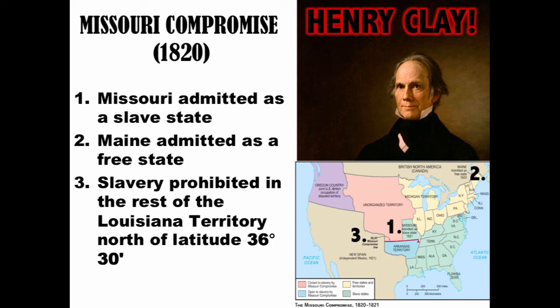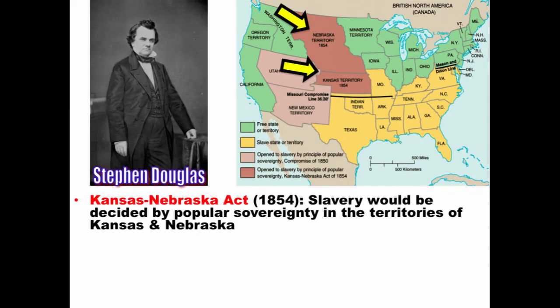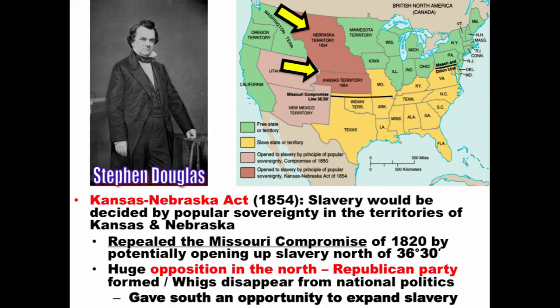The Missouri Compromise deal was undone in 1854 when the Kansas-Nebraska Act, introduced by Stephen Douglas, stated that slavery would be decided by popular sovereignty in the territories of Kansas and Nebraska. What the Kansas-Nebraska Act did was basically repeal the Missouri Compromise of 1820 by potentially opening up slavery north of the 36°30' line. This created a huge opposition in the North and led to the creation of a new political party — the Republican Party — while the Whigs disappeared, splitting over the Kansas-Nebraska issue.